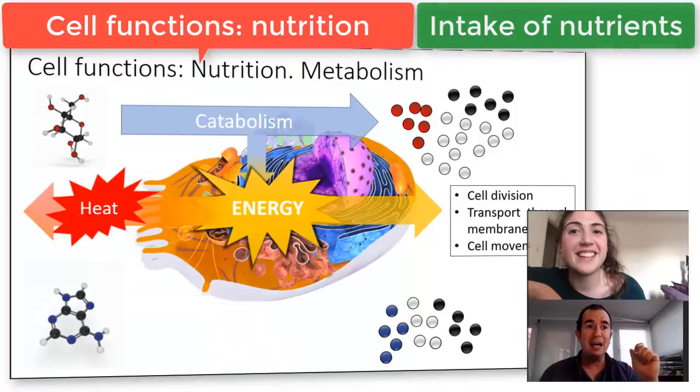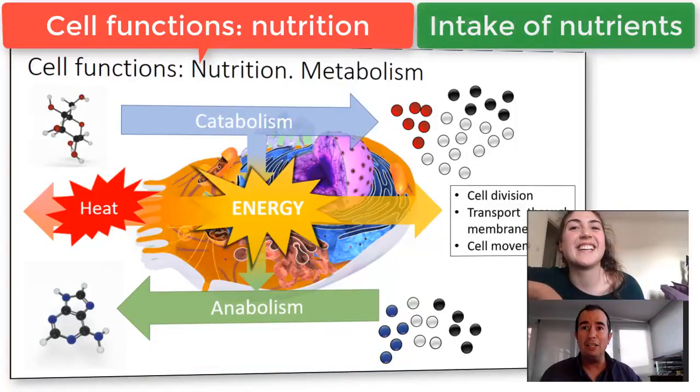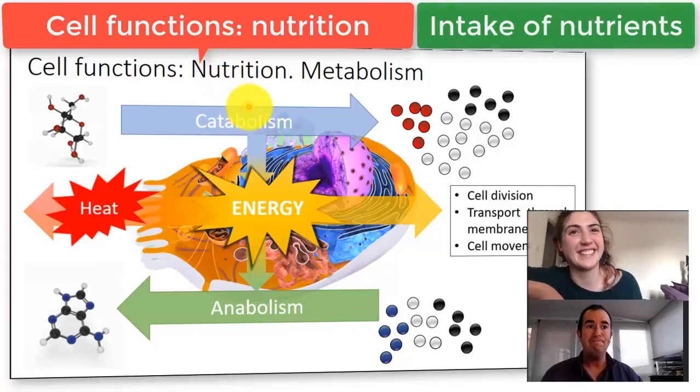Now, metabolism consists of the transformation of substances through what kind of processes? Catabolism and the other one is anabolism. I've got it here. Fantastic. So these are chemical processes.